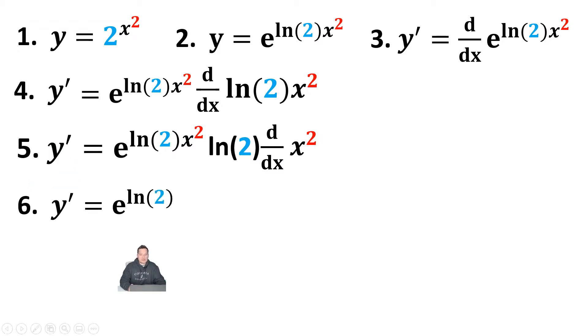So it's going to be y prime equals e to the ln of 2x squared times the ln of 2 times the derivative of x squared, which is just 2x. So I just bring that red 2 down and place it in front of the x just the way you see it. At this point, we're pretty much done.